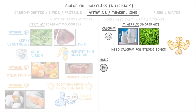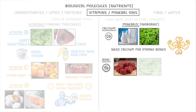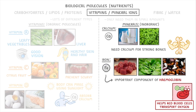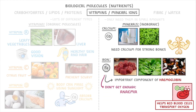Lastly we have iron, which you get from red meat, spinach, and beans. Iron is a really important component of haemoglobin, which helps your red blood cells transport oxygen around the body. So if you don't get enough iron, you can develop a condition called anemia, where you can't transport as much oxygen to your tissues anymore.